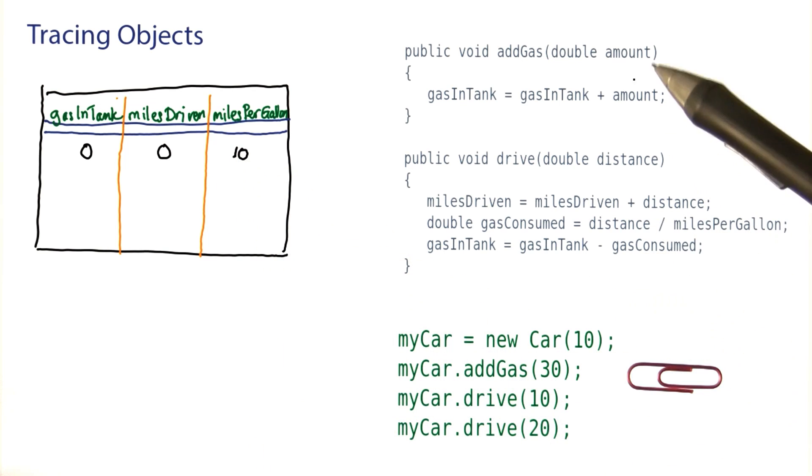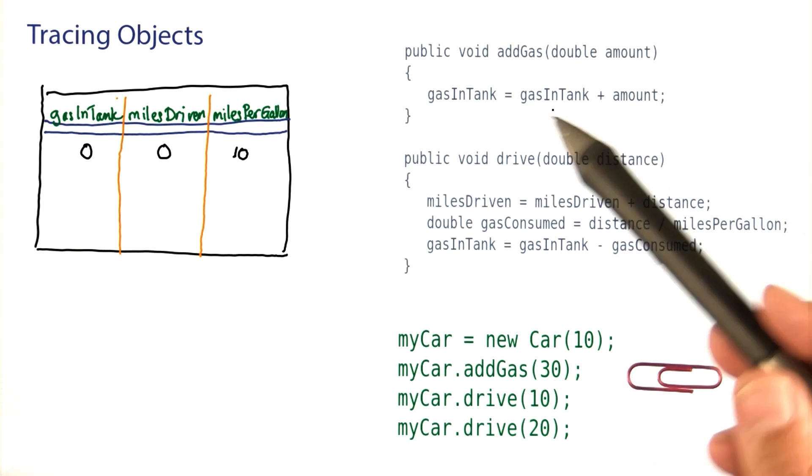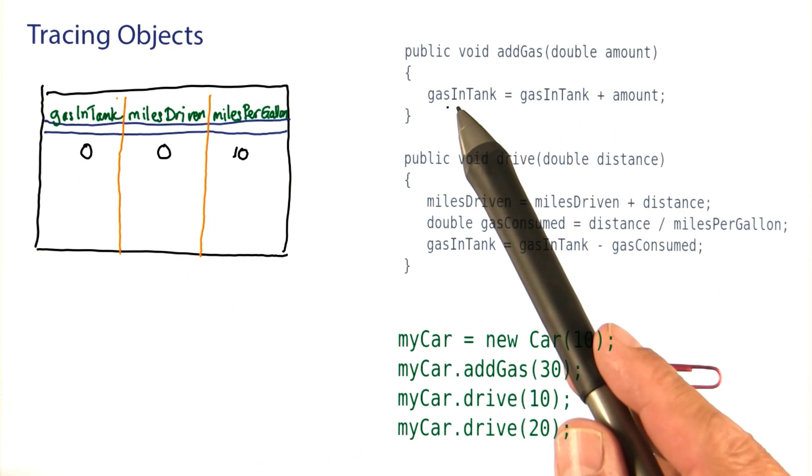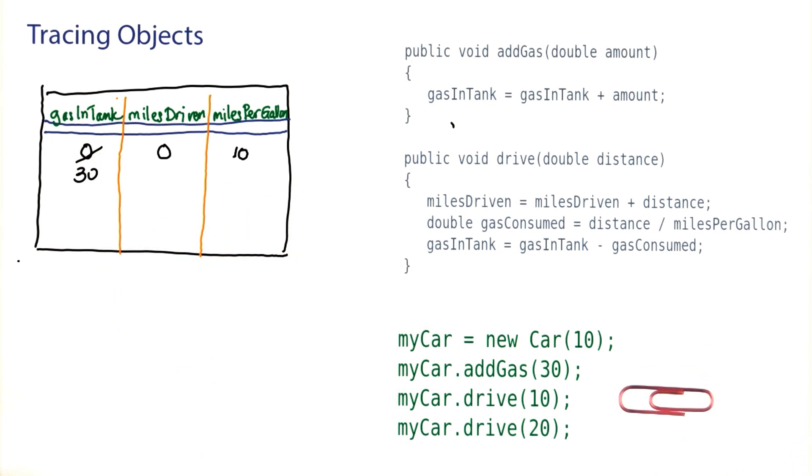Now we enter the add gas method here. Amount is 30. Gas in tank is zero. So the effect is that now gas in tank is set to 30. Moving on.